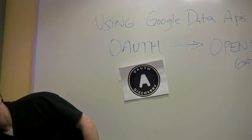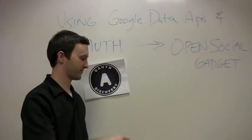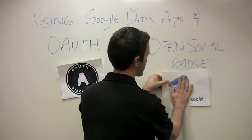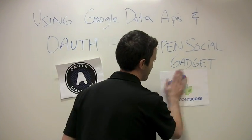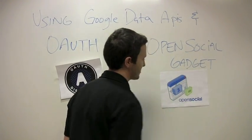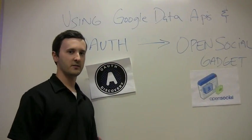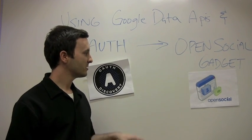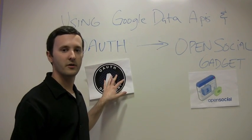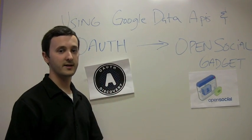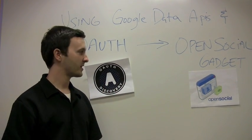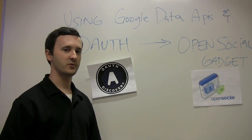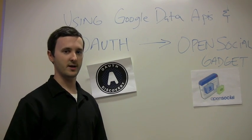The next thing we'll be talking about is OpenSocial. In the case of iGoogle, you can create a really interesting OpenSocial gadget using OAuth to access a user's private calendar data, blogger data, contacts, and what have you, with the Google Data APIs.